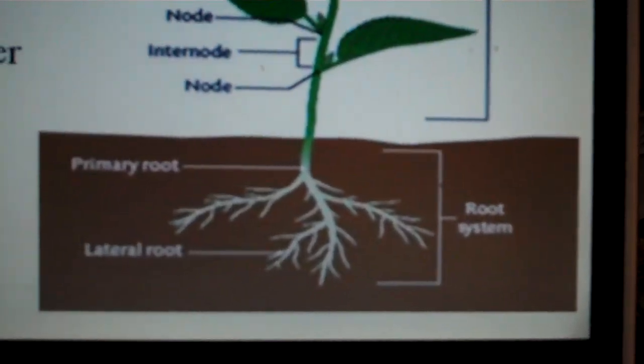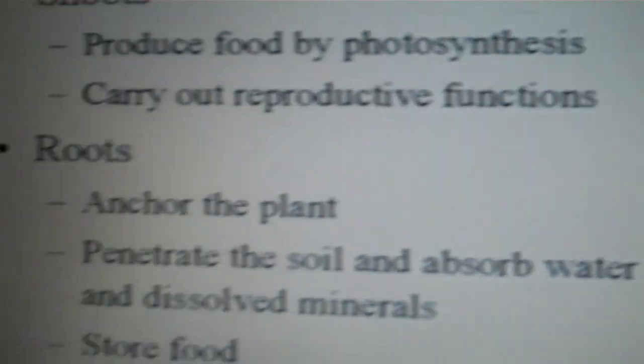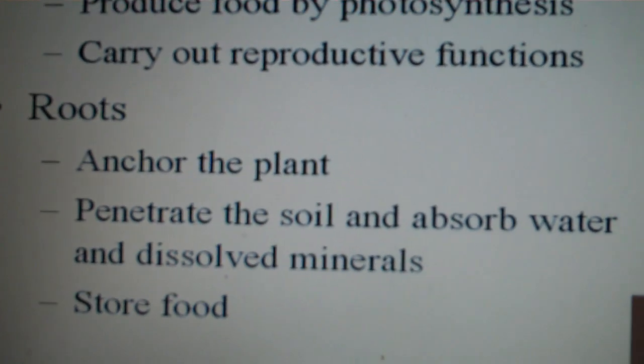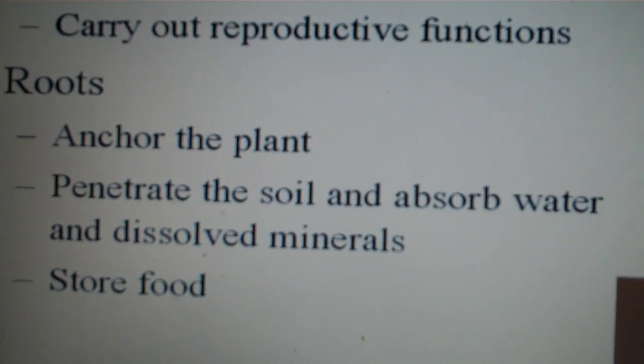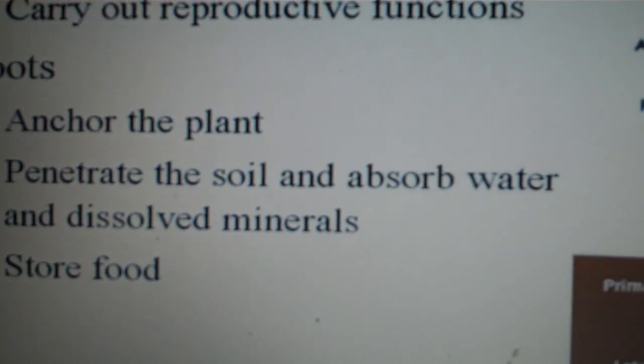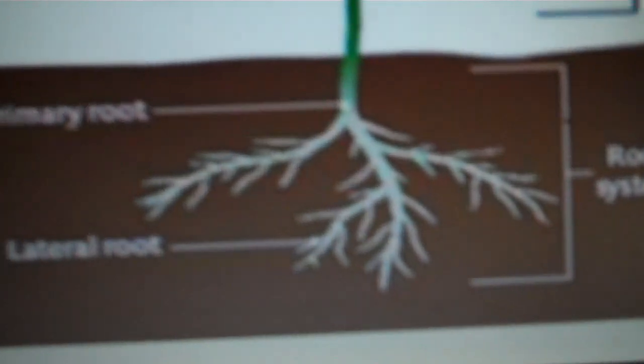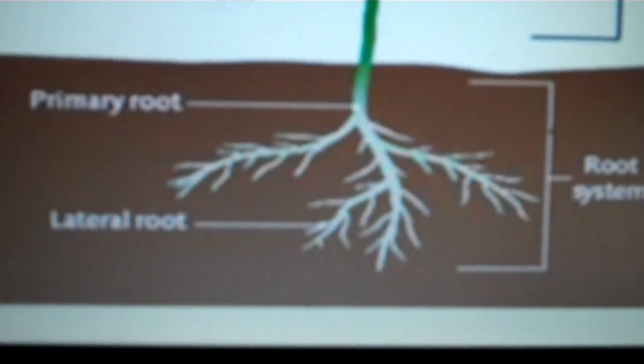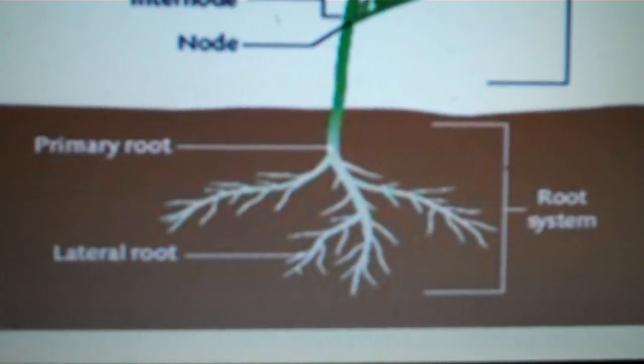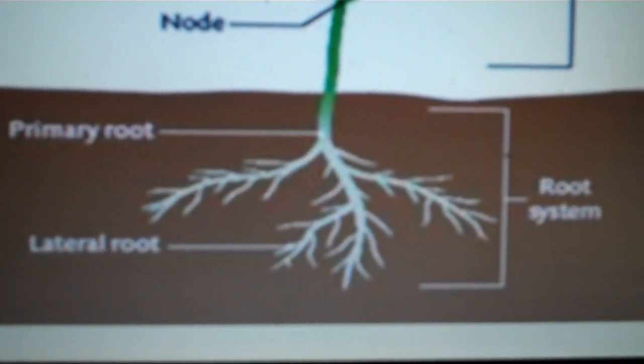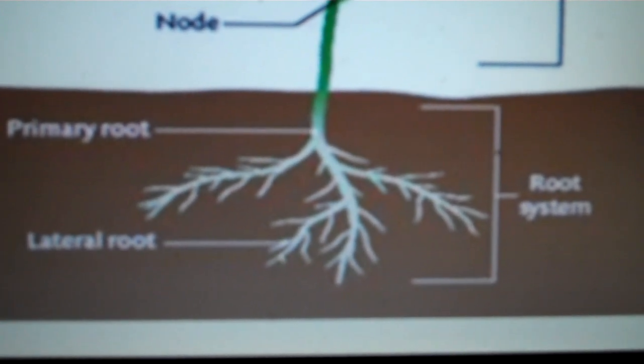Now the roots, the root system is going to anchor the plant, penetrate the soil and absorb water and dissolved minerals and also store food depending on the root system. So the root system consists of a primary root and then also lateral roots that come off the sides of the primary root.